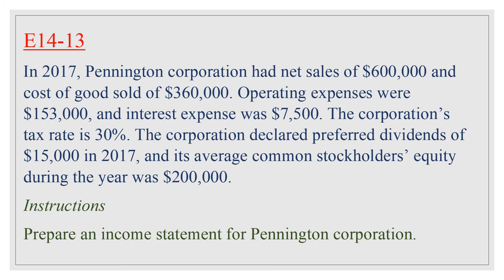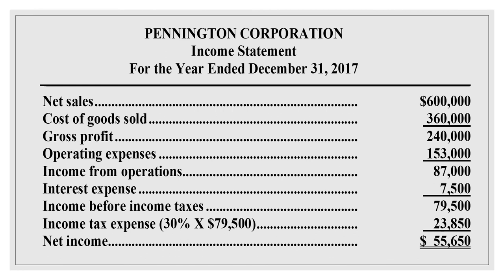The last subject in Chapter 14 is how to prepare a corporate income statement. Exercise 14-13: In 2017, P Corporation had net sales of $600,000 and cost of goods sold of $360,000. Operating expenses were $153,000 and interest expense was $7,500. The corporation's tax rate is 30%. The corporation declared preferred dividends of $15,000 in 2017, and its average common stockholders' equity during the year was $200,000.